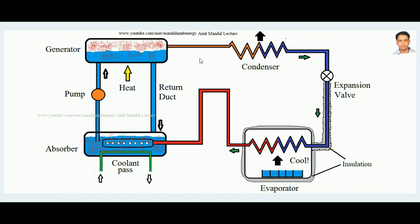In the absorber, ammonia is absorbed in liquid water forming a strong solution. When sent to the generator and heat is added, ammonia is liberated leaving a weak solution, which returns to the absorber via a return duct. This is the cyclic process in the generator-absorber system. To keep the absorber water cool, a coolant is supplied through a heat exchanger arrangement, removing heat so the water remains at a low temperature.